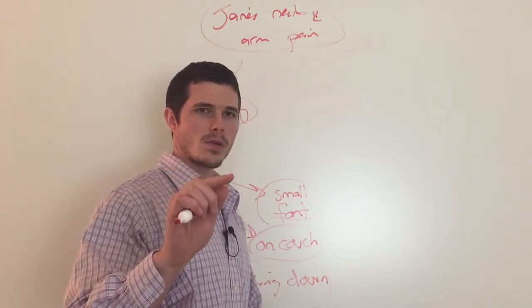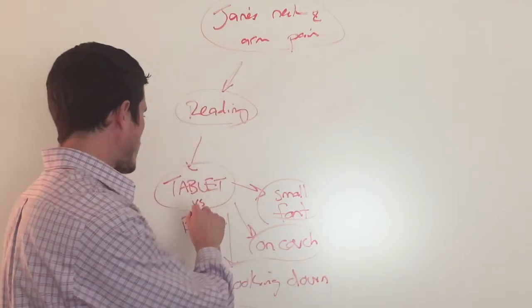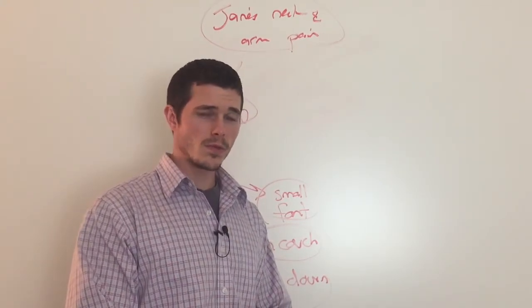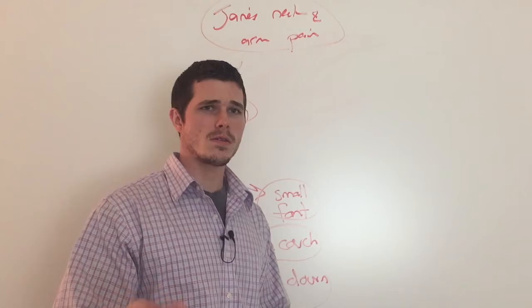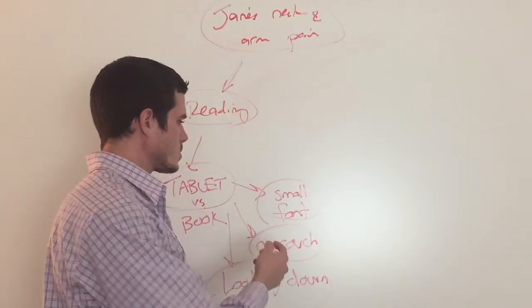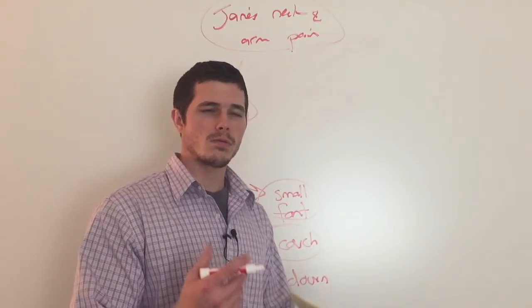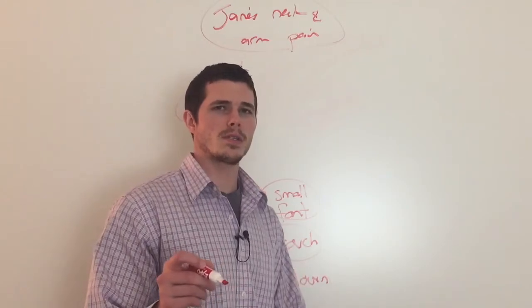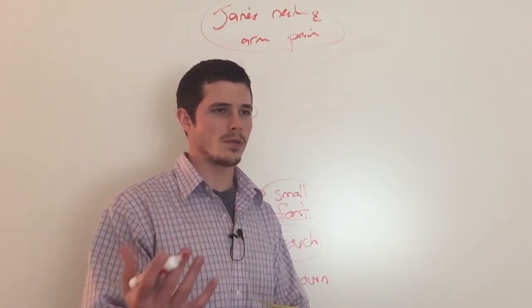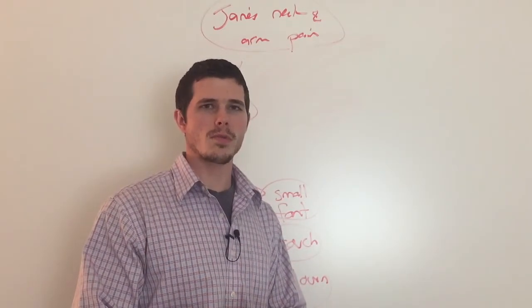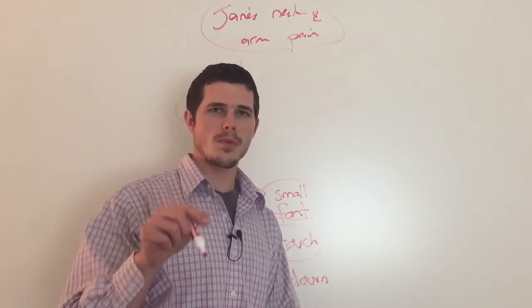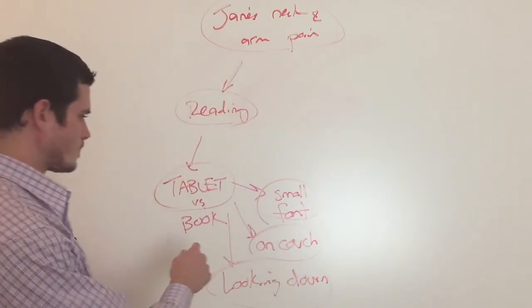So right there, the patient already has identified some specific things that aggravate their condition. And then you might ask them, okay, so it seems like when you're on your tablet, you have more discomfort in your neck and your arm. Seems as though you feel as though the smaller font makes you look down more, which might seem to aggravate things. And you're usually doing it on the couch. Well, interesting. So what happens if you sit in a hard chair, you sit at your table and you read your tablet or you surf your tablet? She says, I never really thought about that. I'll give that a try. So right there, you've already empowered the patient to take control of their own pain and help them identify some aggravating factors.